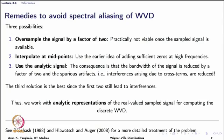Once I generate 2N observations of x from N observations — or once I have the sampled x at the faster rate 2*Fs — then the frequency grid choice goes along the same lines as the DFT itself. I would choose 1 over 2N as a frequency grid. So coming back to the remedies: to avoid spectral aliasing, either I should oversample the signal by a factor of 2, which is only possible if I have access to the continuous time signal and may not be true for most situations. The second remedy is to interpolate at midpoints, which fixes the problem, but there is an additional problem peculiar to Wigner-Ville — the problem of interferences. And the third remedy is to use the analytic signal.